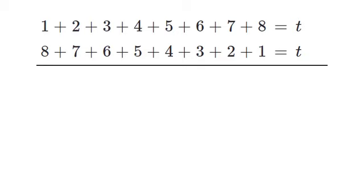Now we add the two rows together like this: one plus eight is nine, two plus seven is nine, three plus six is nine, and so on.